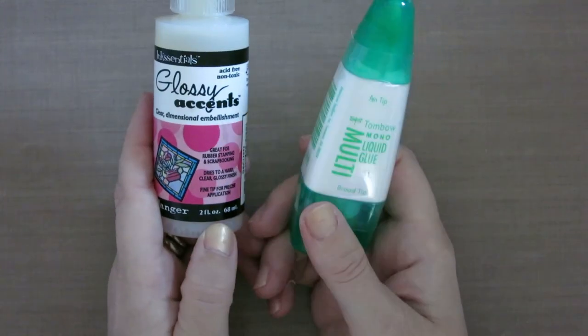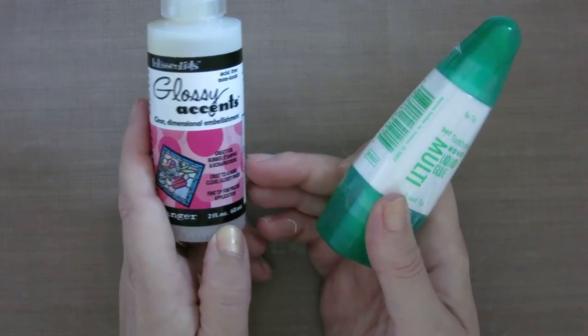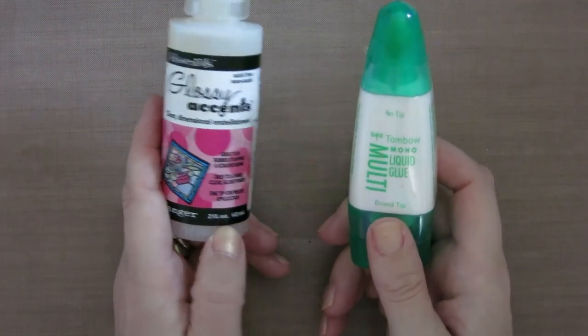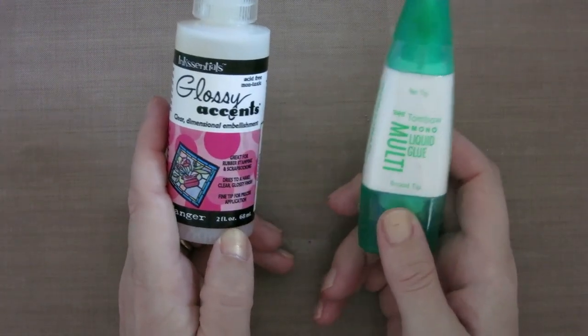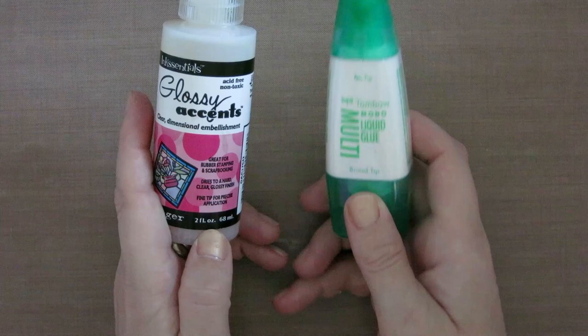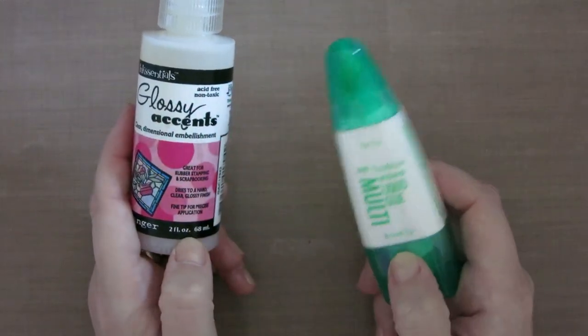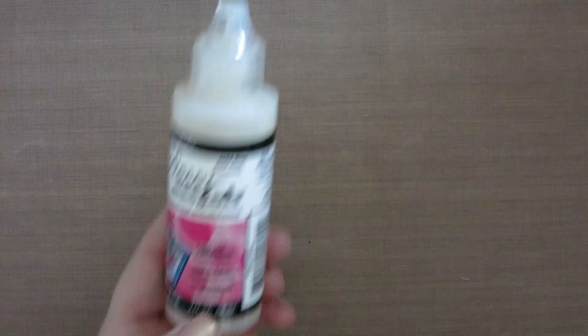I'm using glossy accents today because when it dries it looks a lot like droplets of water, so if you can end up seeing it it doesn't really matter too much. You could use Tombow liquid glue or even Elmer's glue for this one. Whatever you've got around.